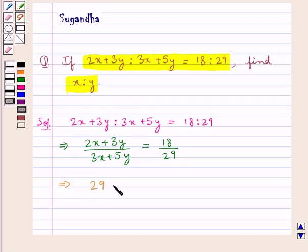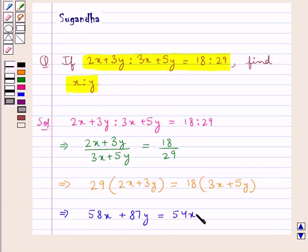we get 29 multiplied by 2x plus 3y the whole is equal to 18 multiplied by 3x plus 5y the whole. This further gives us 58x plus 87y is equal to 54x plus 90y.